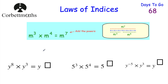Here are some questions — feel free to press pause and work out the missing powers. Our first one: Y to the power of 8 multiplied by Y to the power of 3. We can add the powers: 8 plus 3 is 11, so the answer is Y to the power of 11. Next, 5 to the power of 3 multiplied by 5 to the power of 4. Both have the same base, so we add the powers: 3 plus 4 is 7, giving 5 to the power of 7. Finally, Y to the power of negative 5 multiplied by Y to the power of 3. Adding the powers: negative 5 plus 3 is negative 2, so the answer is Y to the power of negative 2.